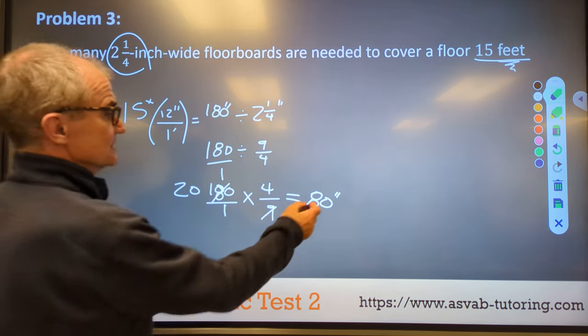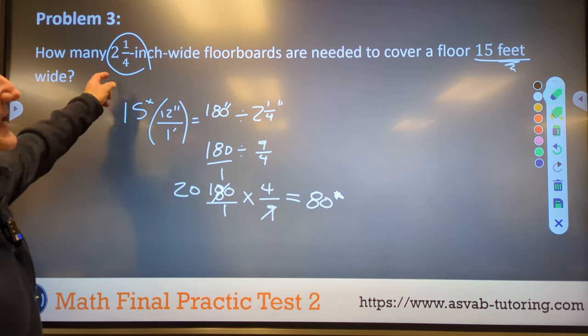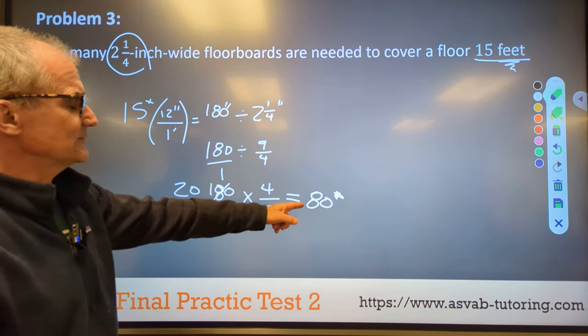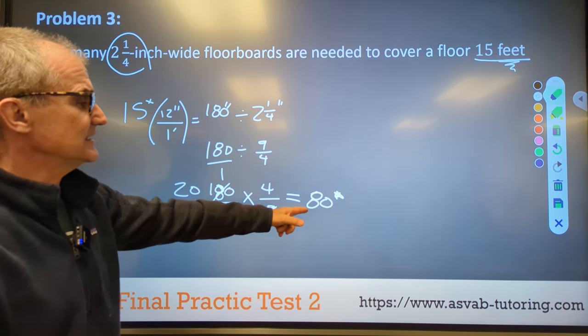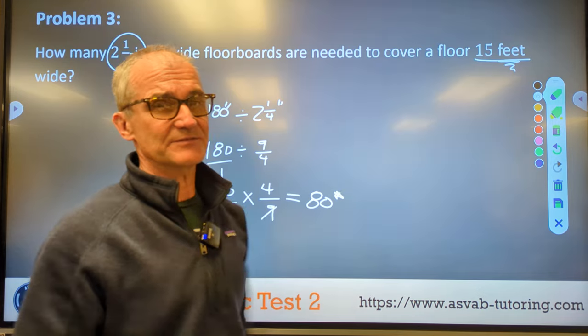So now I have 20 times four or 80. How many times does that go into that? So it's going to go in there 80 times. So I need to buy 80 boards. 80 times two and a quarter is equal to 15 feet.